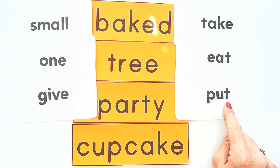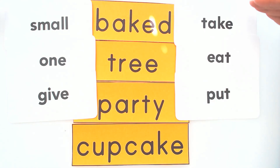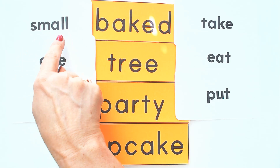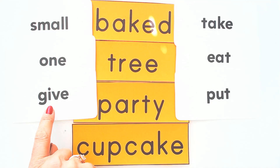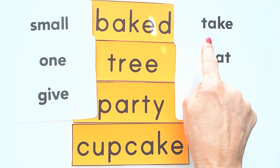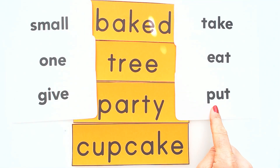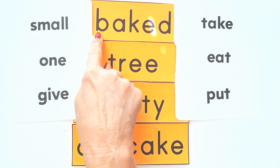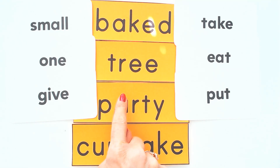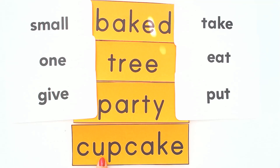So let's read all of our words: small, one, give, take, eat, put. And now our story words: baked, tree, party, cupcake. All right, there's your practice. Let's do our second read.